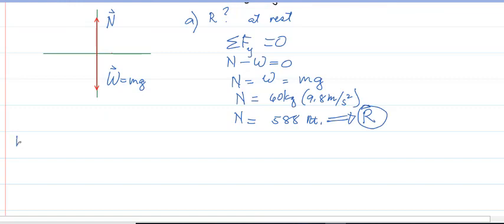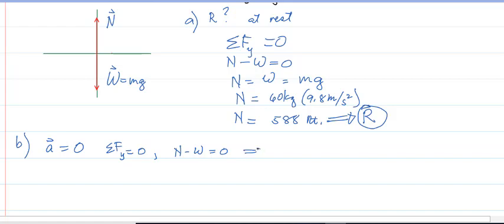For letter B, what is the reading if the elevator moves constantly upward? If it moves constantly upward, there is no acceleration — acceleration is zero. Regardless of how fast the elevator moves up, it does not affect our reading. So the summation of forces along Y is still zero, N minus W equals zero, and the reading N is still equal to 588 Newtons.